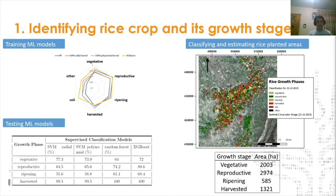From there, we were able to estimate that 2,003 hectares were in vegetative stage, 2,974 in reproductive stage, 585 in ripening, and 1,321 were recently harvested. This kind of information is useful for the National Federation to calculate total production for a region, and it also allows technicians to rapidly identify which areas should be affected by extreme climate events that are not favorable for any specific growth stage.